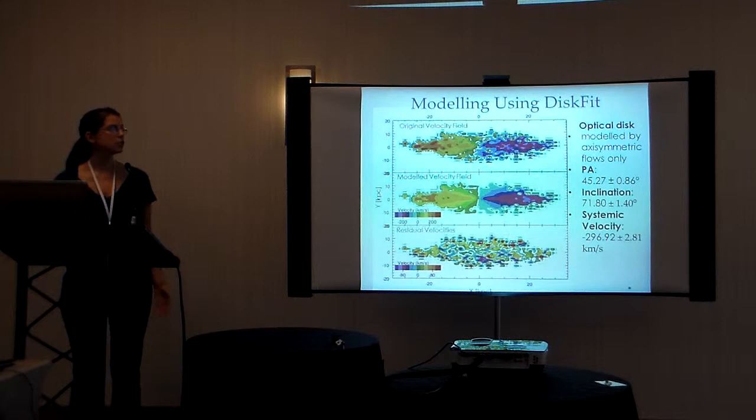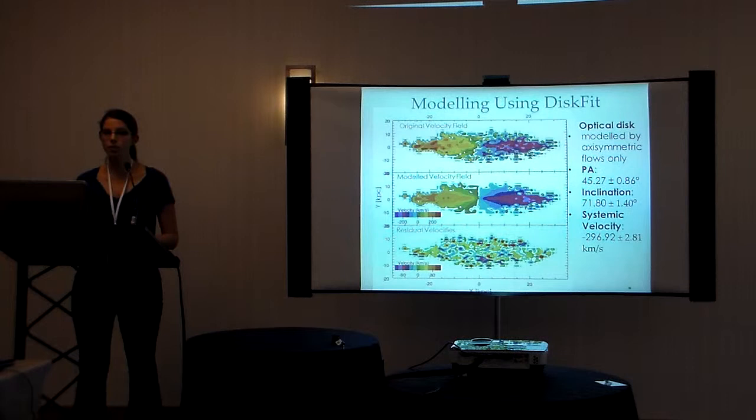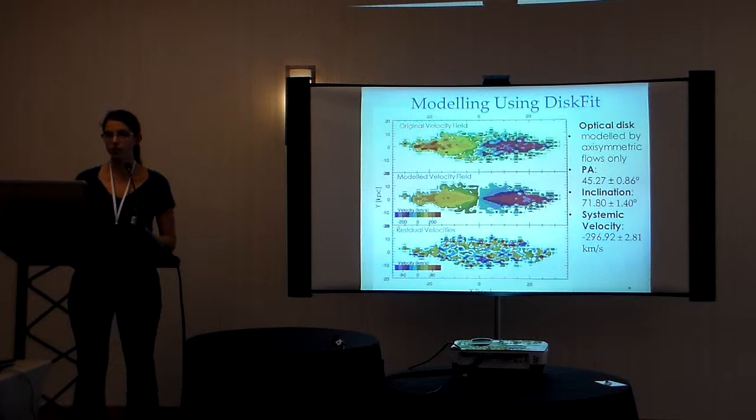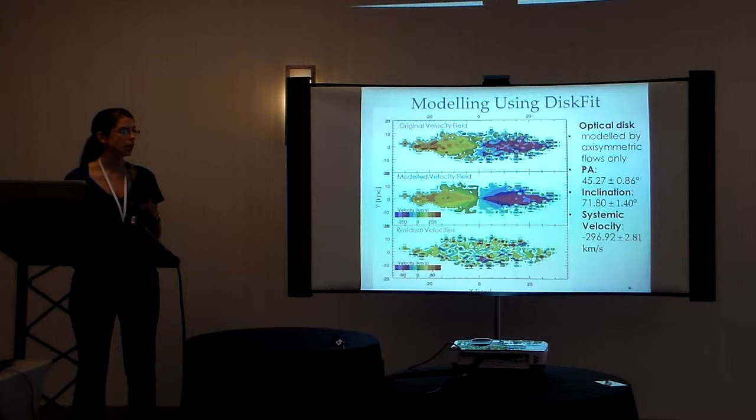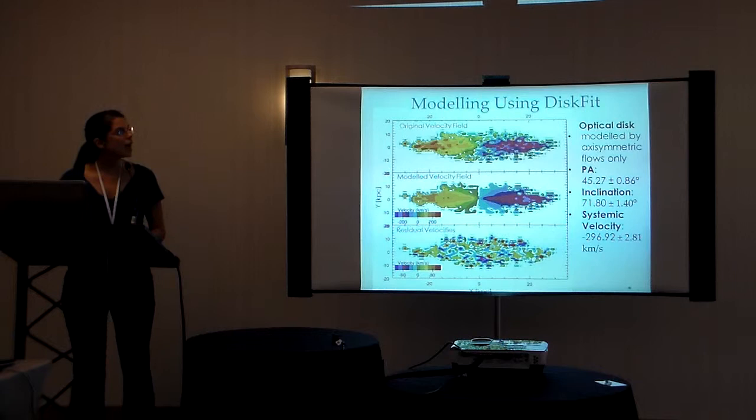So here I have the model that we made to the optical velocity field using DISC-BIT. The top panel of this graph shows the original field. The middle panel shows our model field, and the bottom panel shows the residual velocities. As you can see from the top field, the velocity field is quite clean. You can model it with just axisymmetric flows, and that's the model that I've shown here.